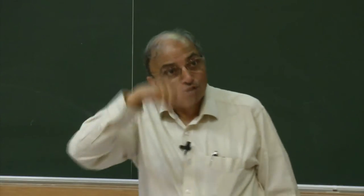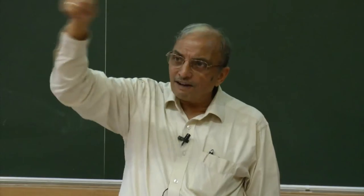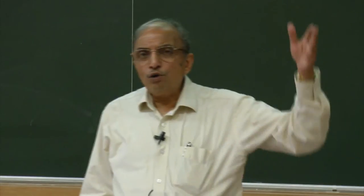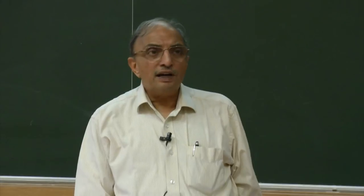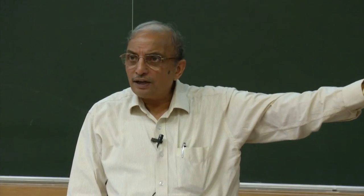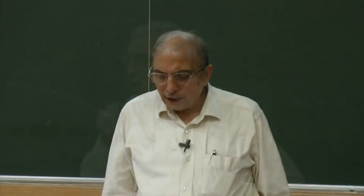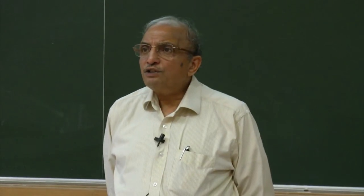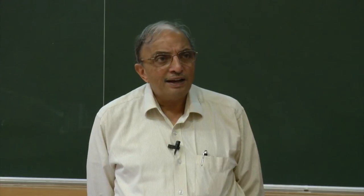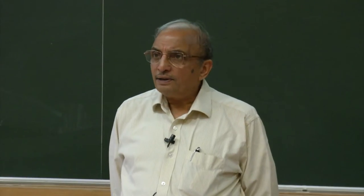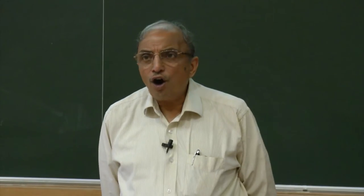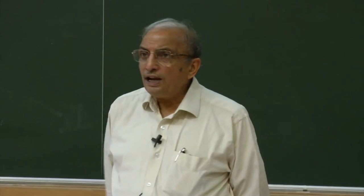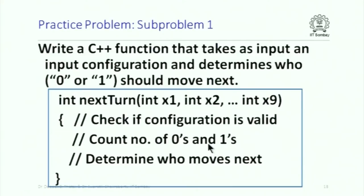Remember: it is like one player saying 0, 0, 0 before giving a chance to someone — not permitted. So amongst the very large number of combinations, there are some which are valid and some which are not. The function is defined as int next_turn with parameters int x1 through int x9. If the configuration is valid, count the number of zeros and ones and determine who moves next.